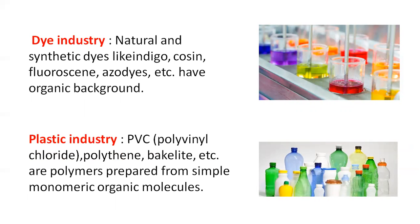Natural and synthetic dyes like indigo and eosin are prepared using organic compounds. Fluorescents and azodyes are also examples of dyes with an organic background. In the plastic industry, polyvinyl chloride (PVC), polythene, and bakelite are polymers prepared using monomers, and these monomeric units are organic molecules. Therefore, the role of organic chemistry is very important in the dye and plastic industries.